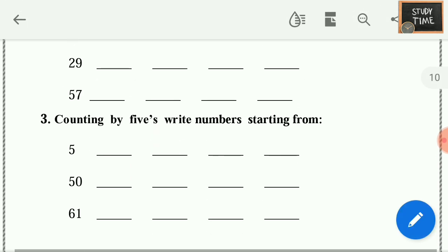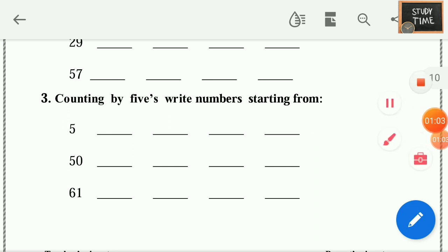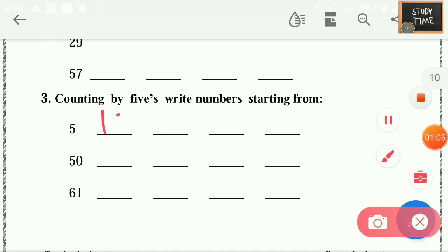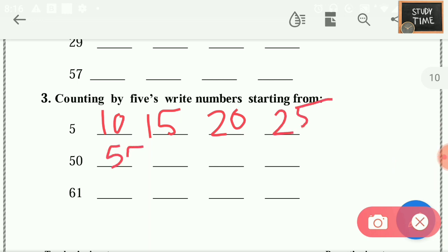Next, counting by 5's, write numbers starting from: 5, 10, 15, 20, 25. Then 50, 55, 60, 65, 70. Next, 66, 71, 76, 81. Like this you have to write.